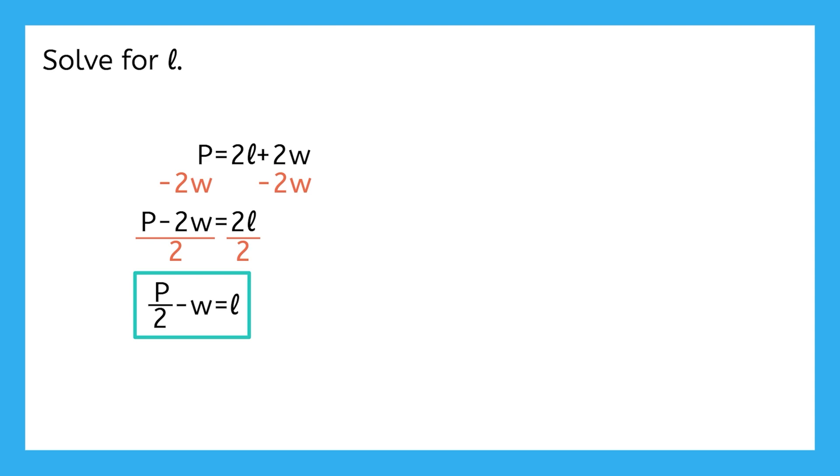Yeah, we could swap our terms and write it as negative W plus P over 2, if we wanted to. These two versions mean the exact same thing, and either would be a perfectly acceptable final answer.